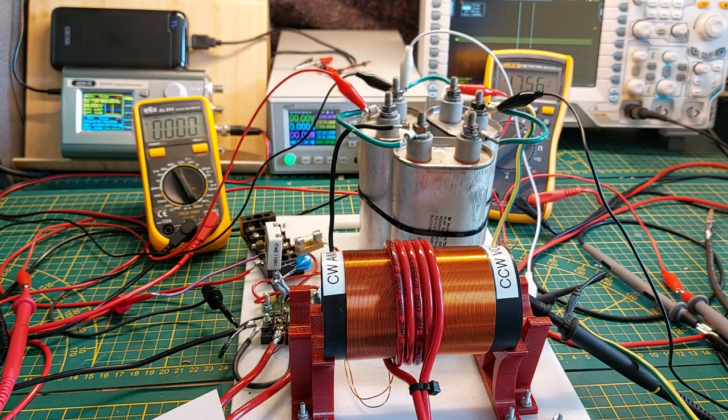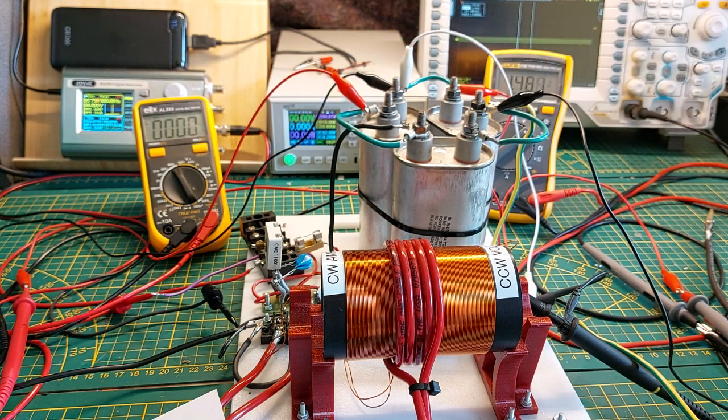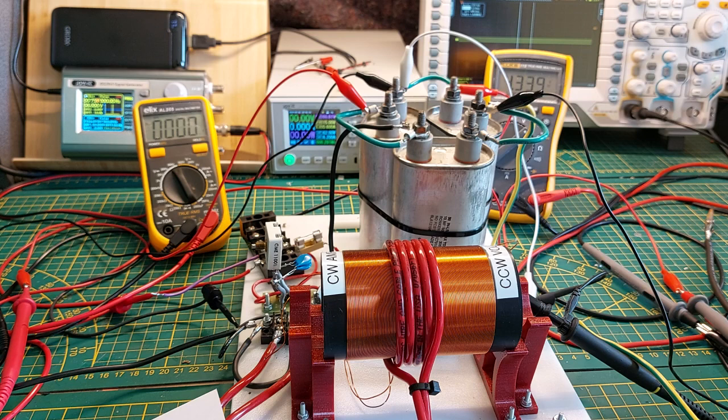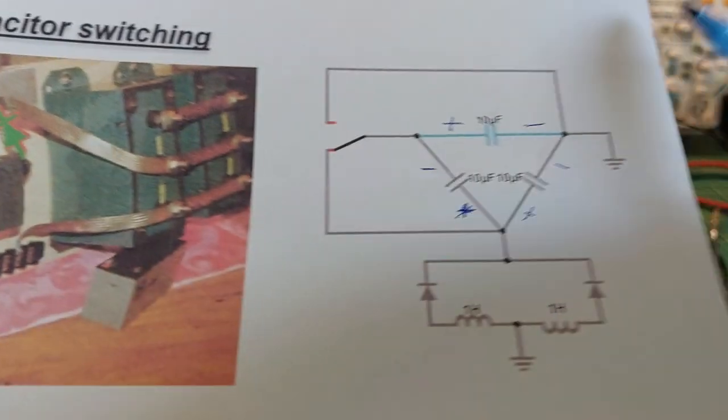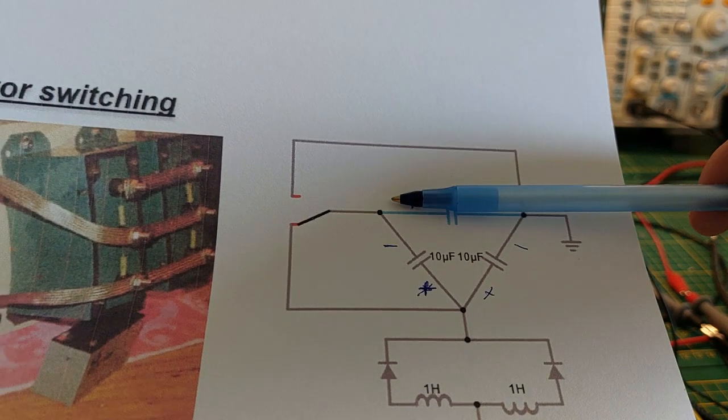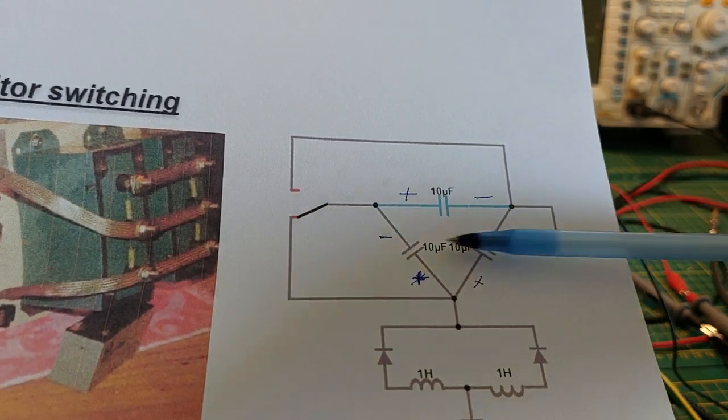So with the same charge that was stored in those capacitors, I can move it around and every time with half the voltage that I have. And that is because when we look at the setup, when we short-circuit this one, then we place those two in parallel.